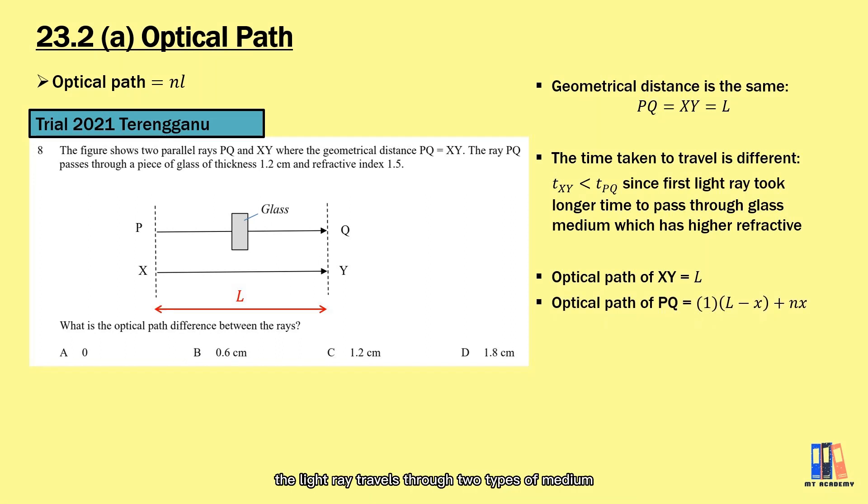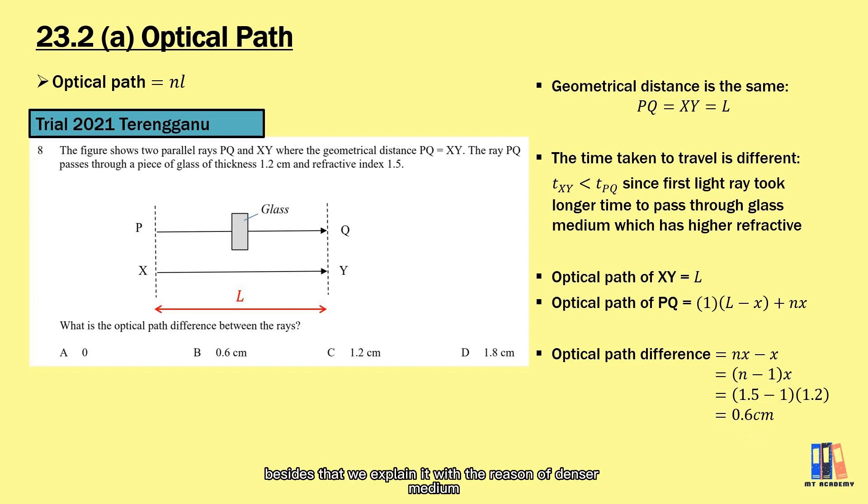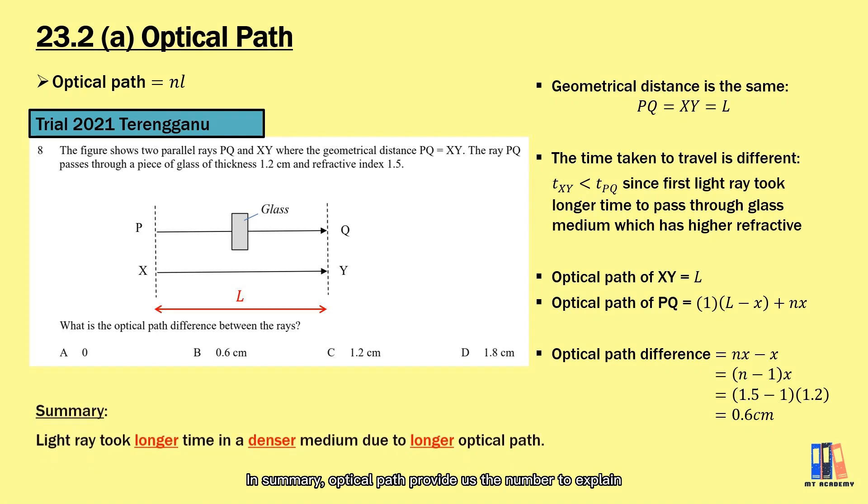The optical path of XY stays the length L multiplied by the refractive index of A. But for path PQ, we have the light ray travel in two types of medium. First in A, the distance is L minus 1.2 cm multiplied by the refractive index of A. Then we have the thickness of glass 1.2 cm multiplied by the refractive index of glass. The total optical path for PQ is L minus x plus nx. The optical path difference equals 0.6 cm in this case. In summary, optical path provides us the number to explain the delay when light travels through denser medium.